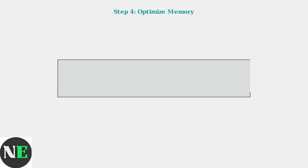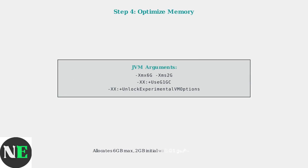Finally, optimize memory allocation for Steam Deck's hardware. Add these JVM arguments to allocate 6GB maximum and 2GB initial memory, plus enable the G1 garbage collector for better performance with modded instances.